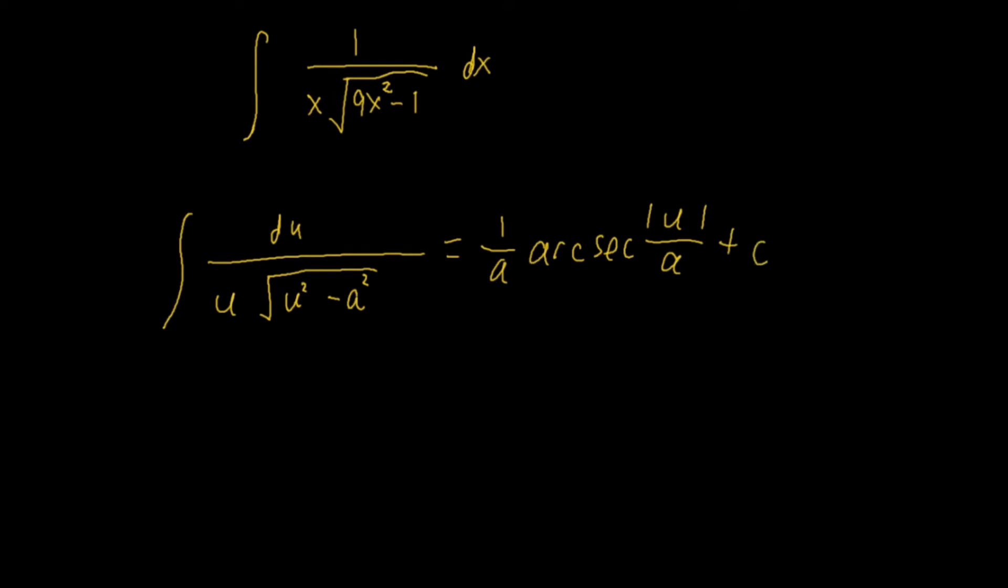So, can we turn it into this form? We can try. Let's see. So, u squared, we have to see if u squared can be equal to 9x squared. Then, u is equal to 3x. Because 9x squared is actually equal to 3x all squared. Then, a squared is equal to 1, so a is equal to 1. We take a positive 1.